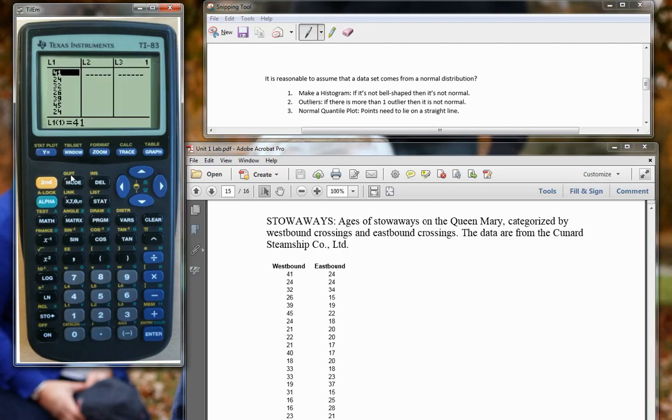And what we're going to do is we're going to first hit your y equals and we want to go up and turn this plot one on. So just go up to it and hit enter. So when you move away from it, it's blackened. Now to make a histogram you're gonna hit second y equals, go to where it says stat plot, hit enter here, and you'll see histogram is this third one. So hit enter, choose the histogram. Okay, make sure this says L1.